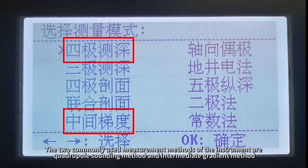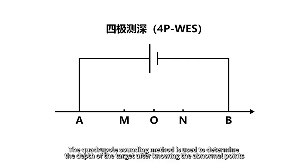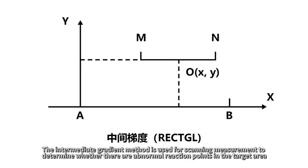The two commonly used measurement methods of the instrument are the quadruple sounding method and the intermediate gradient method. The quadruple sounding method is used to determine the depth of the target after knowing the abnormal points. The intermediate gradient method is used for scanning measurement to determine whether there are abnormal reaction points in the target area.